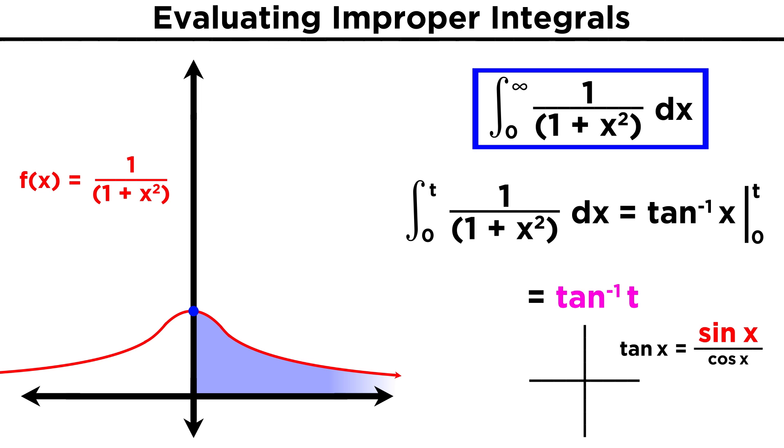For an inverse tangent to be getting larger, it must mean that the sine value is increasing while the cosine value is decreasing, because a larger and larger number being divided by a smaller and smaller number must be approaching infinity. Moving through quadrant one, the tangent value approaches infinity until we get to half pi, where it is undefined. That means that the inverse tangent of infinity is half pi.